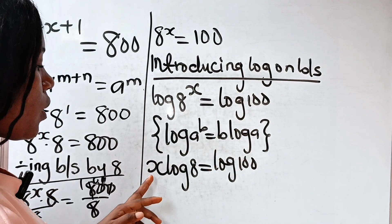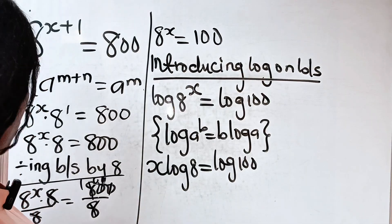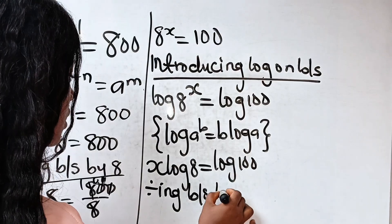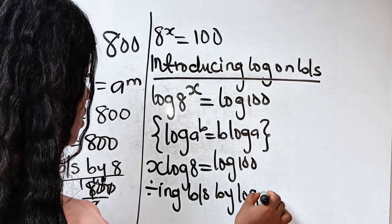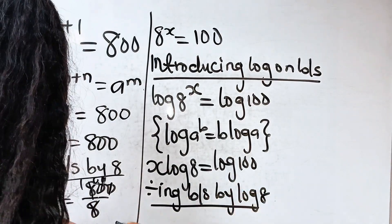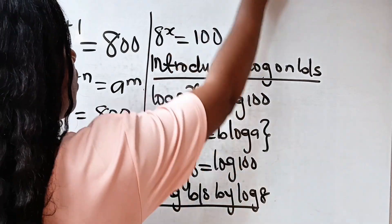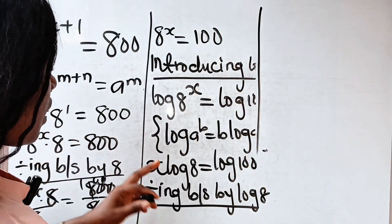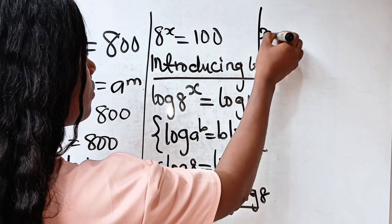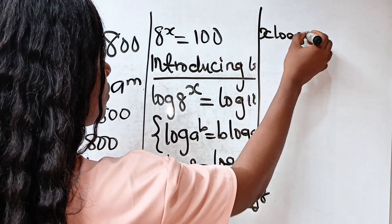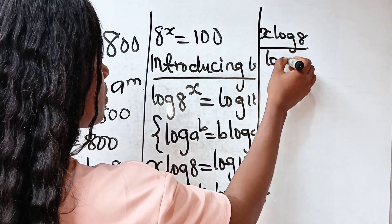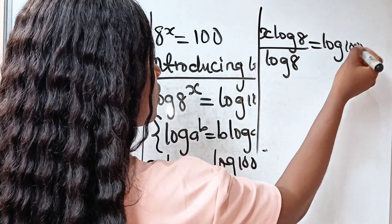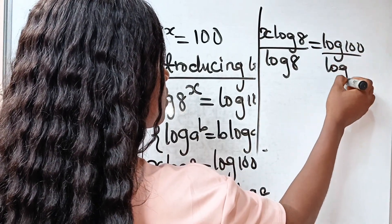Now let us divide both sides by log 8. Dividing both sides by log 8, we will have x log 8 divided by log 8 is equal to log 100 divided by log 8.